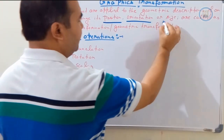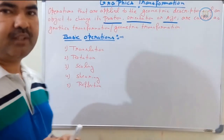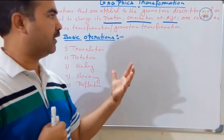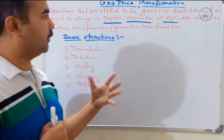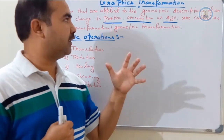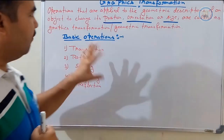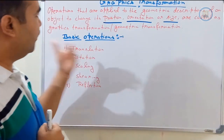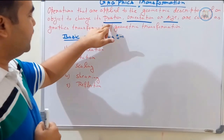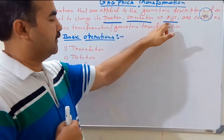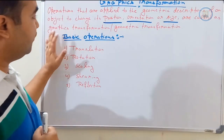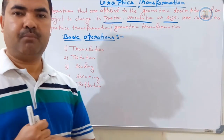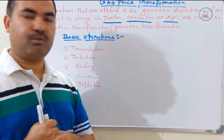These operations we are going to perform with the help of mathematics. Remember, in computer graphics, in the background, we are always doing mathematical operations. Mathematics and geometry are very important for graphics. So, to change the geometric description of an object with respect to its position, orientation, and size is called geometric transformation or graphics transformation. Sometimes it is also referred to as mathematical modeling or mathematical transformation.